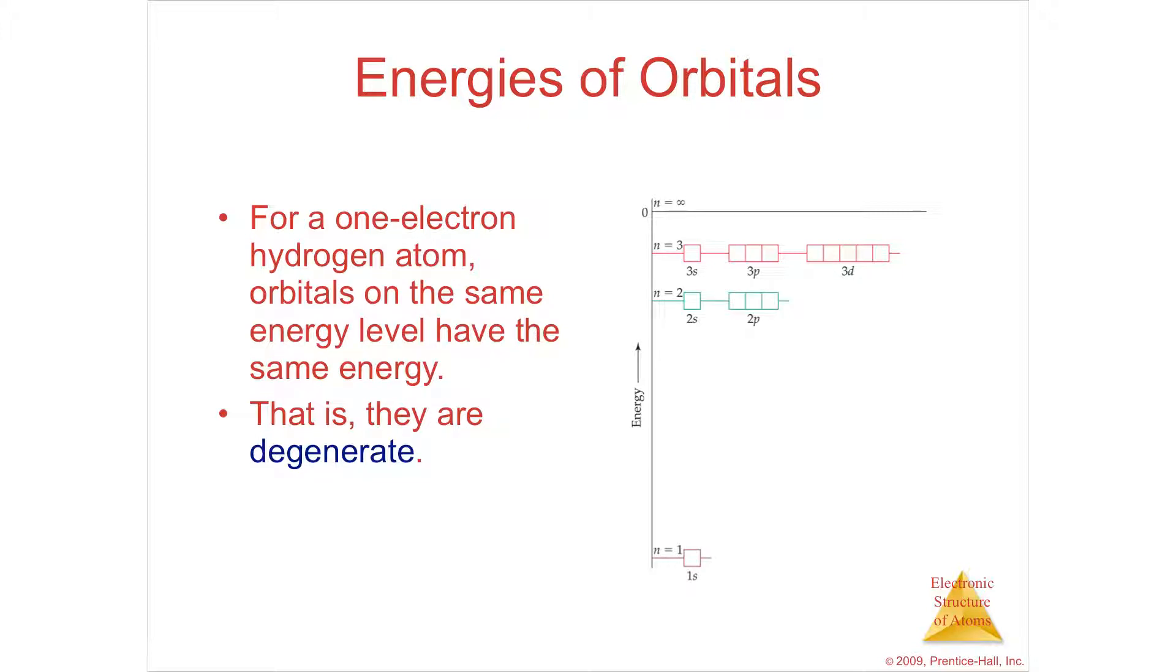In a one-electron atom, all of the orbitals in row 2 would have the same energy level. The rent for that orbital would be the same. The 2s would be the same as the 2p; the 3s, 3d, 3p would all have the same energy as long as they're on the same level. There's only one electron, so it's not going to bother anybody.